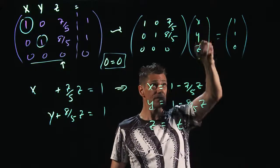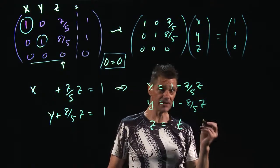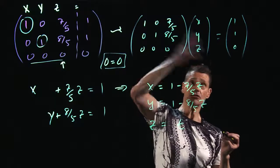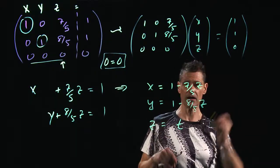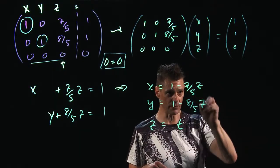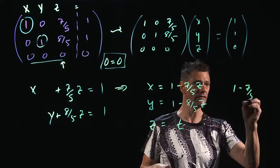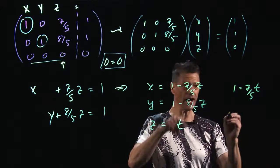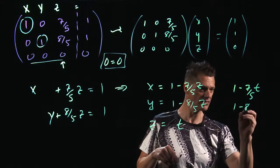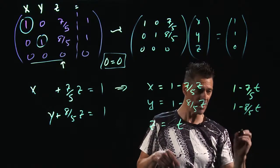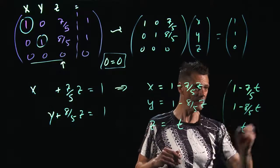But you write your vectors, your column vectors like this: x, y, z. So this, the solution to this would be, anytime we have a z now, we're going to call it t, would be this: x, which is 1 minus 7 fifths t; y is 1 minus 8 fifths t; and then z is t.